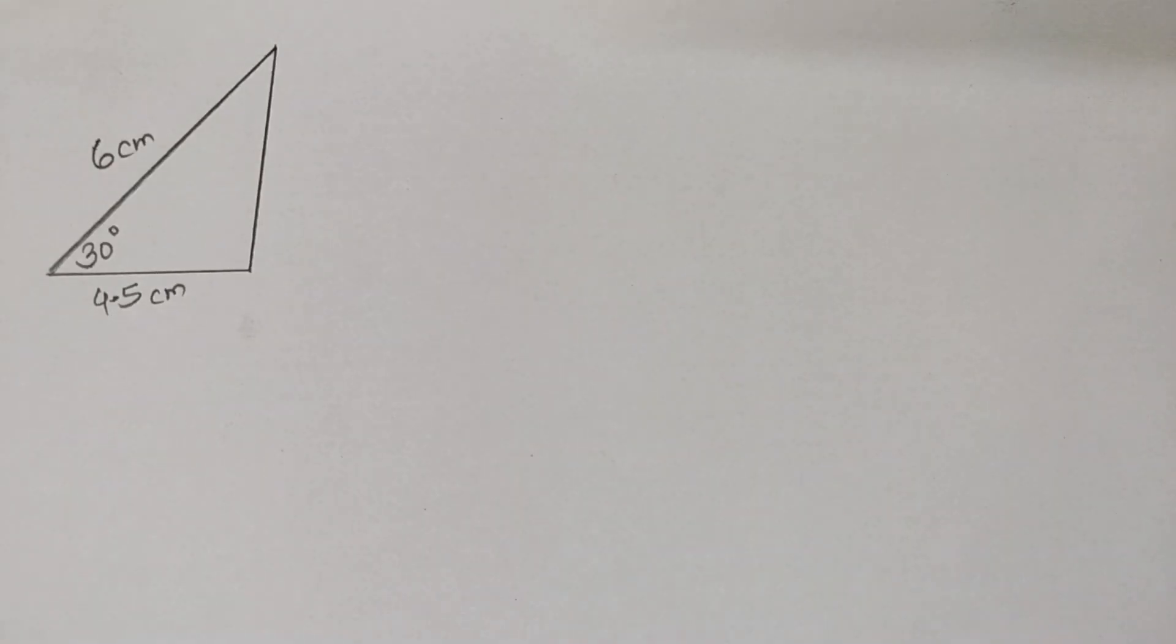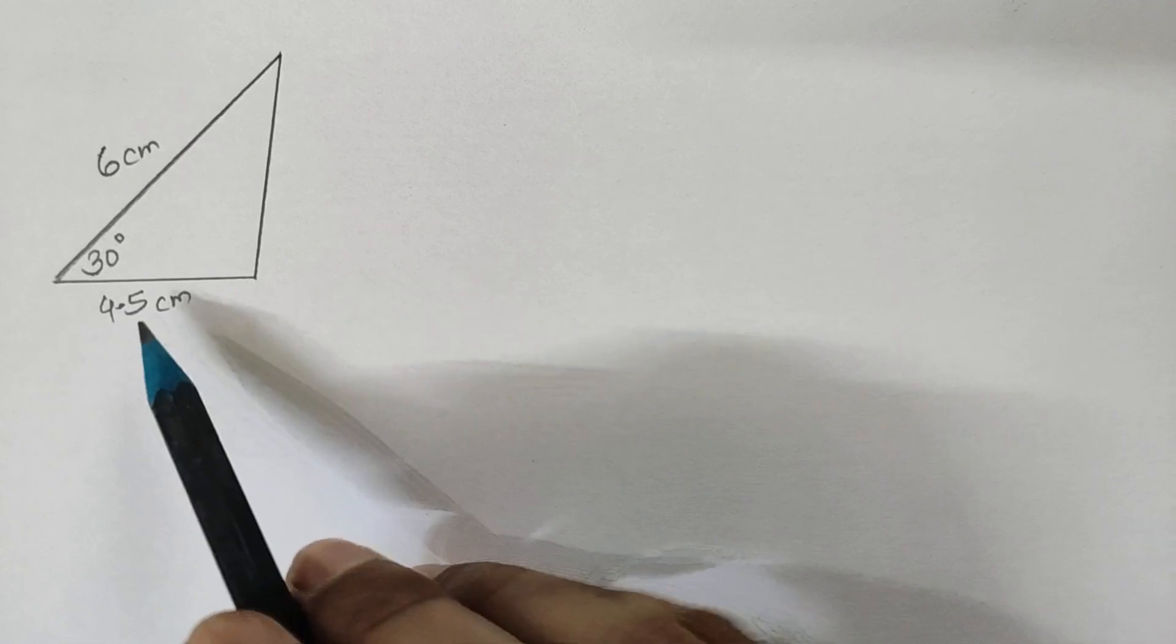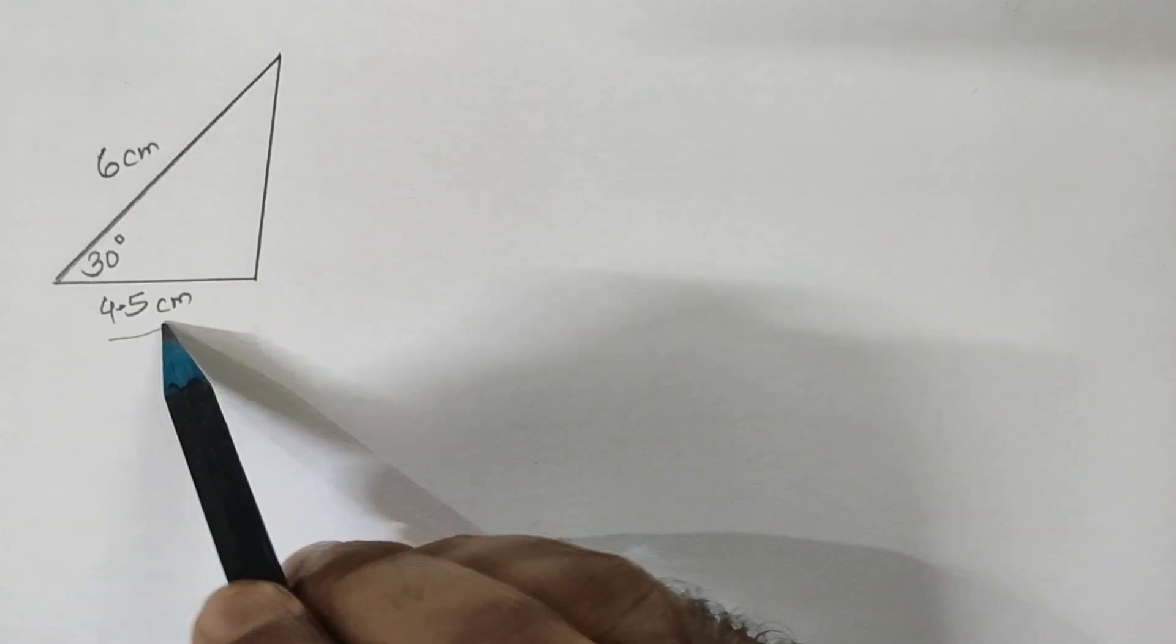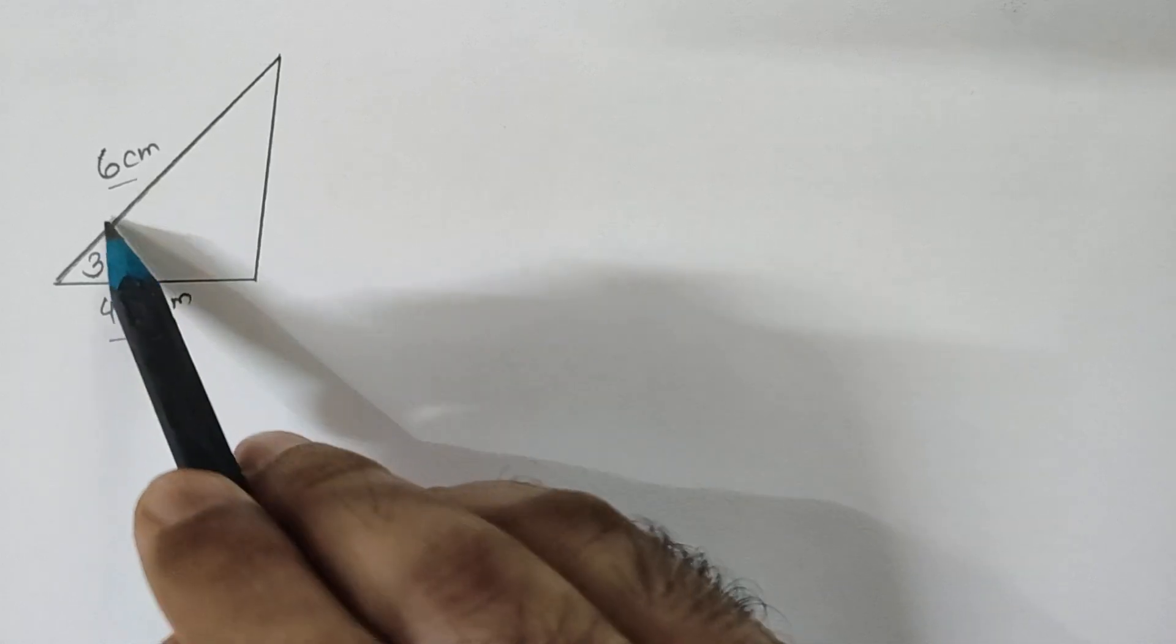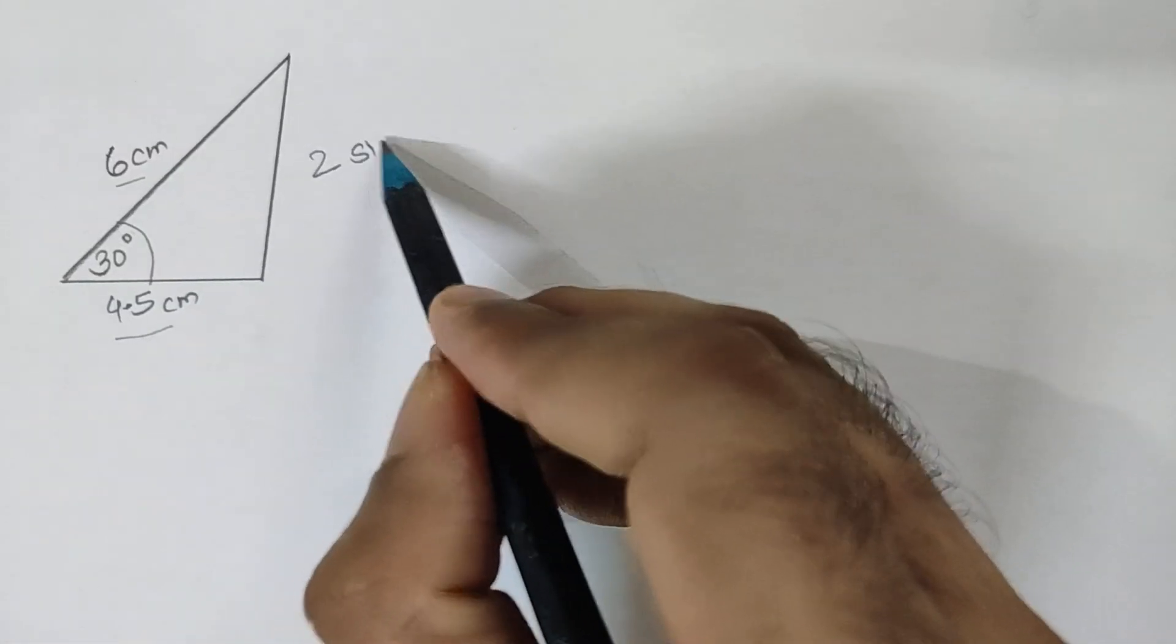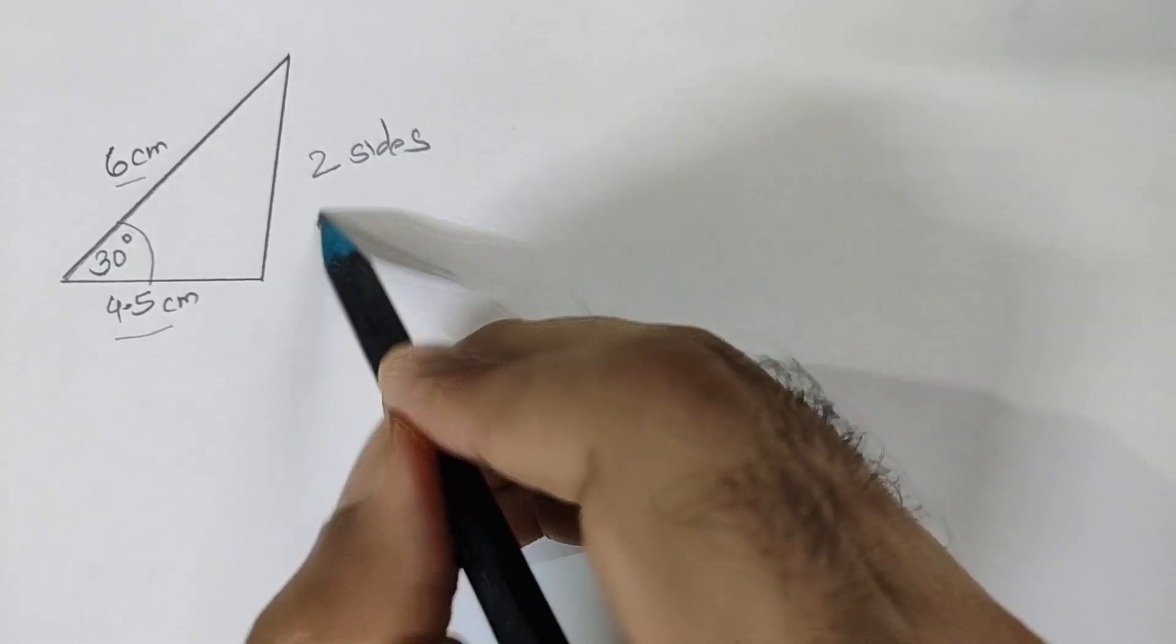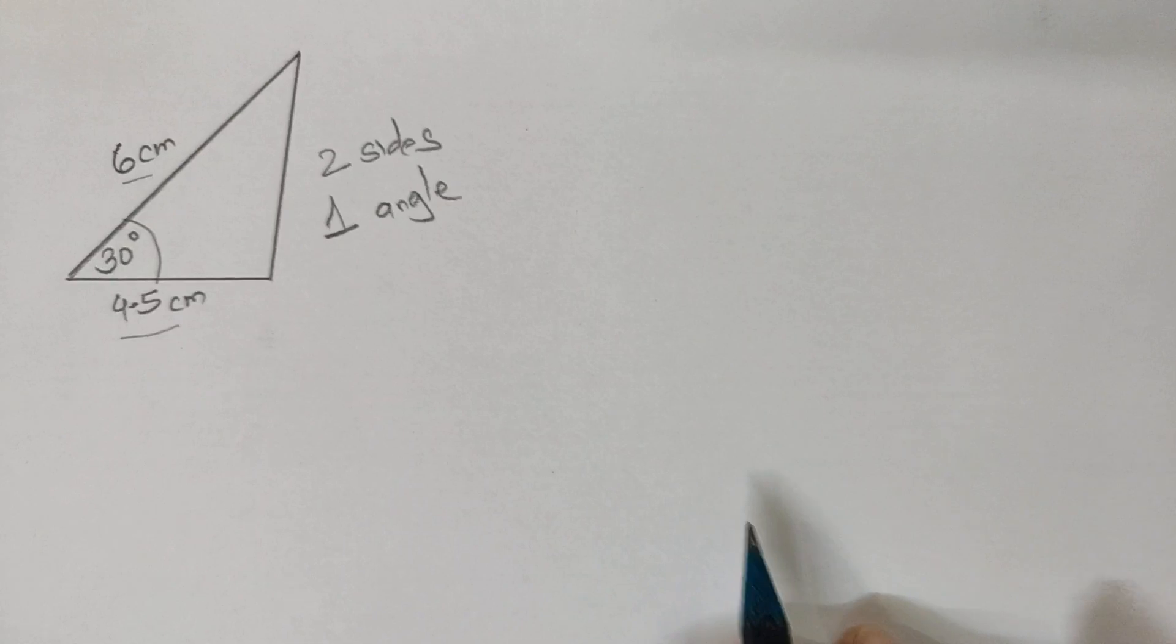Hello everyone, in this video we will learn to draw an accurate copy of a given triangle. For now, we have drawn a rough diagram with the following measurements: the base 4.5 centimeters, another side 6 centimeters, and the angle between them is 30 degrees. So what is given? Two sides are given and one angle between those two sides is given.